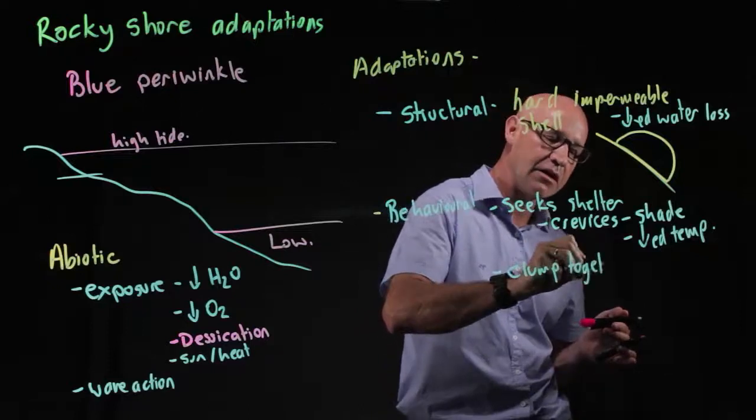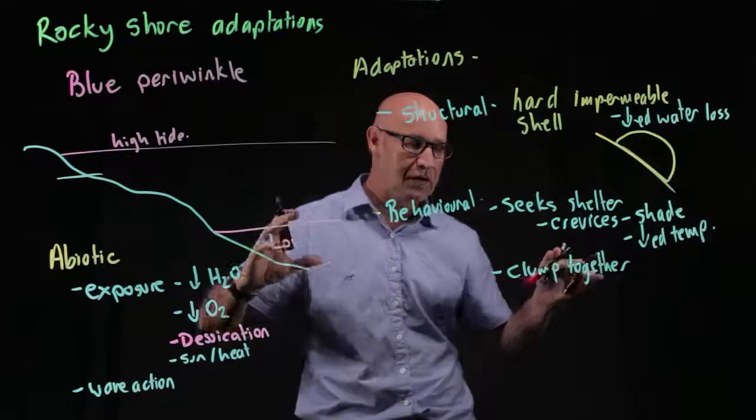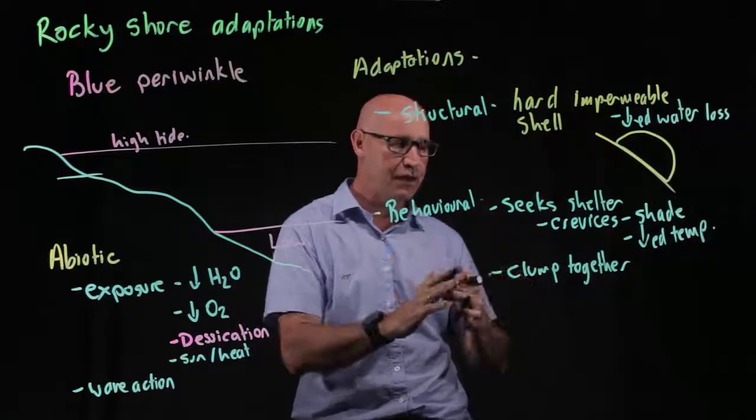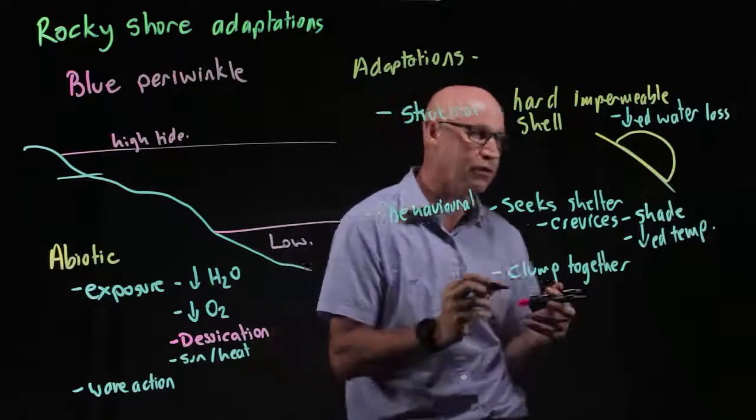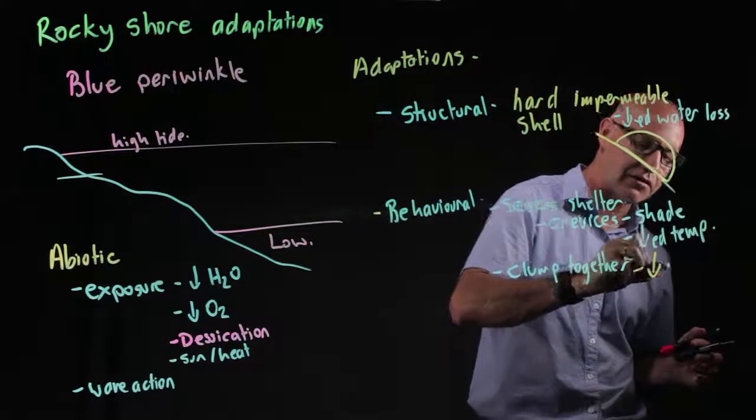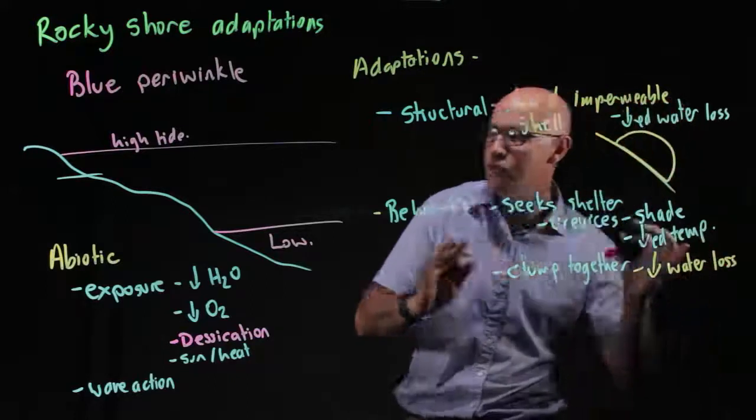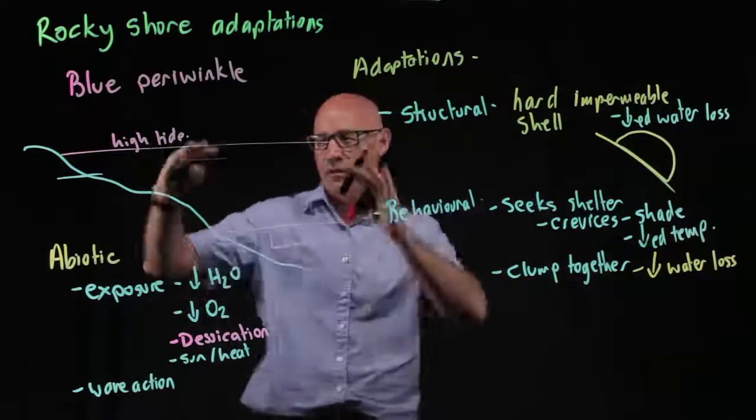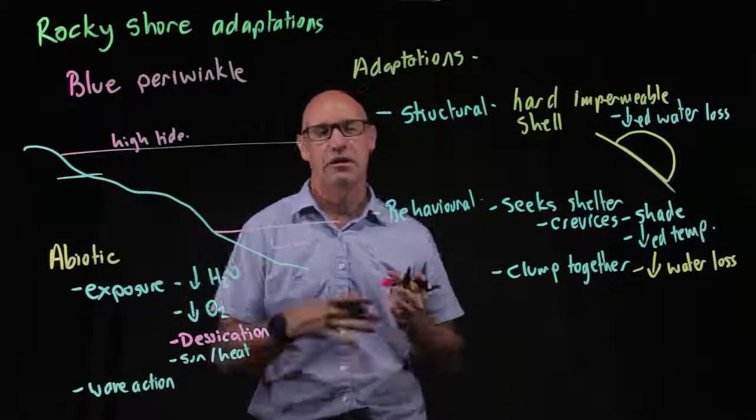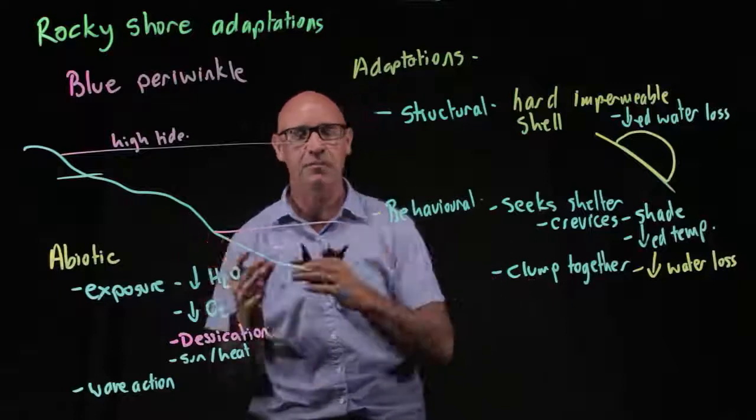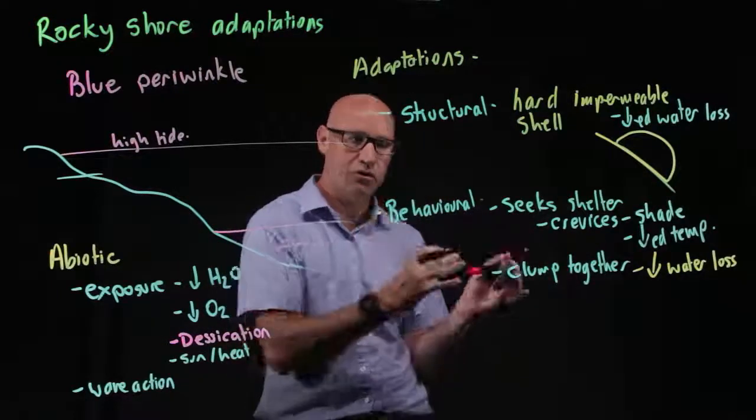The other thing they tend to do, because there's so many of them, is clump together. They're motile organisms that move around, but they're able to move close together to retain water and prevent water loss. When the tide goes out, they move to the crevices in the shade and clump together, creating a larger surface area to reduce water loss.